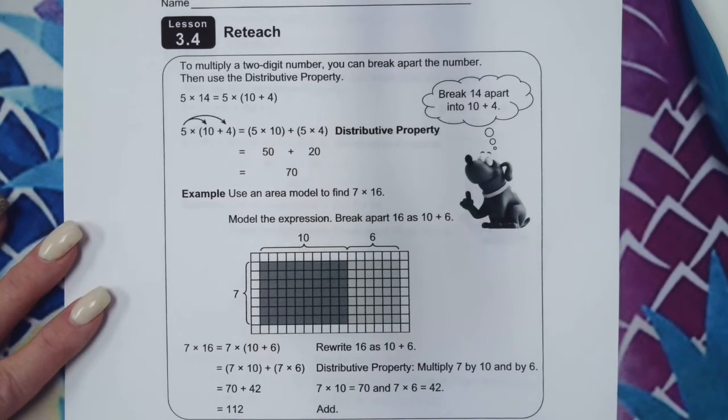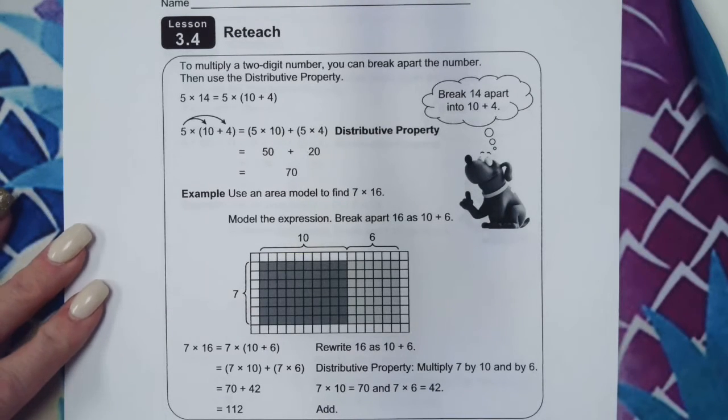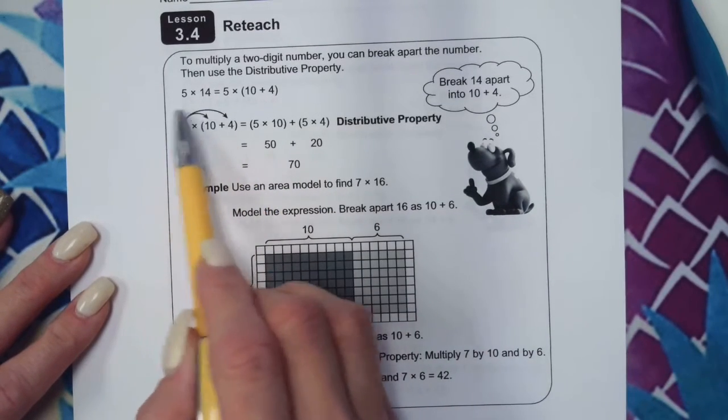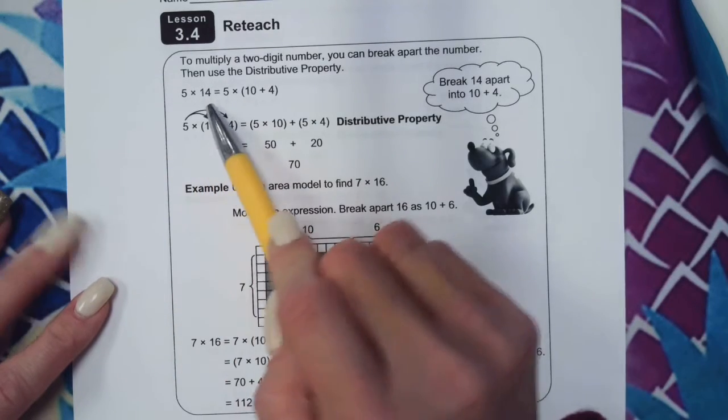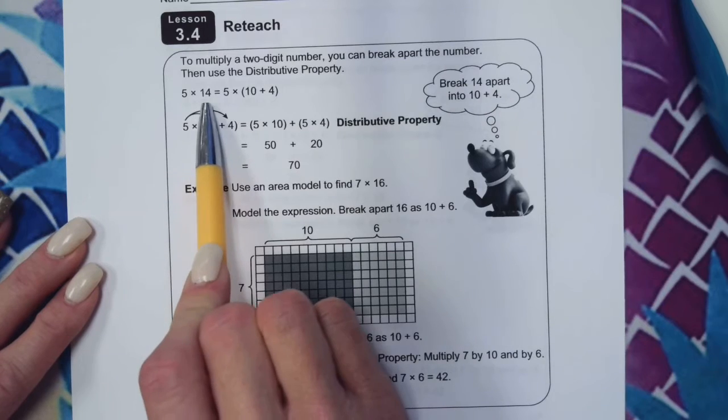Okay everybody, today we are looking at using the distributive property to help us multiply a two-digit number by a one-digit number. To do that, you can break apart the two-digit number. So here, if we were multiplying 5 times 14, we can take our two-digit number of 14 and break it apart into the tens place plus the ones place: 10 plus 4.